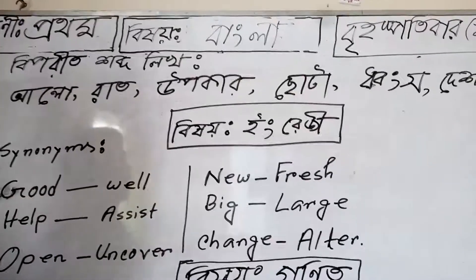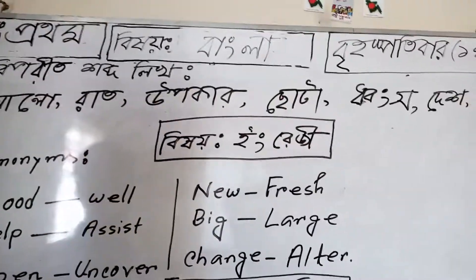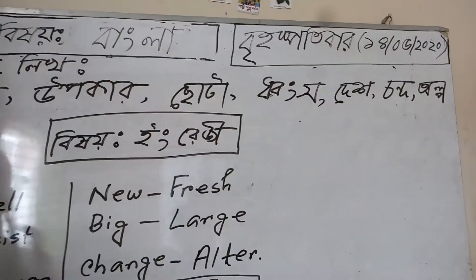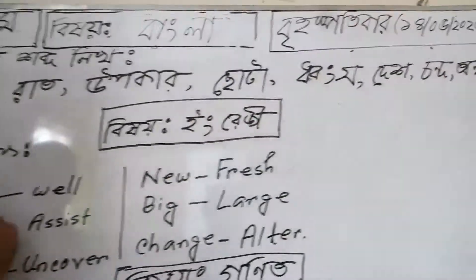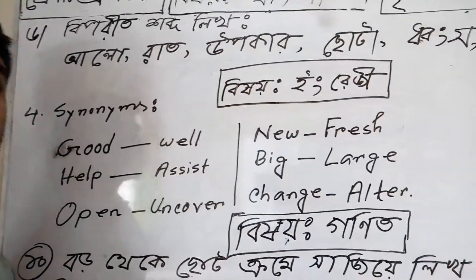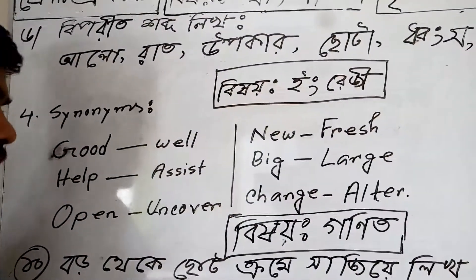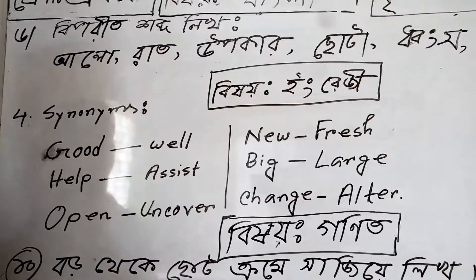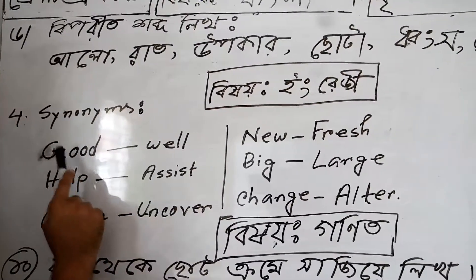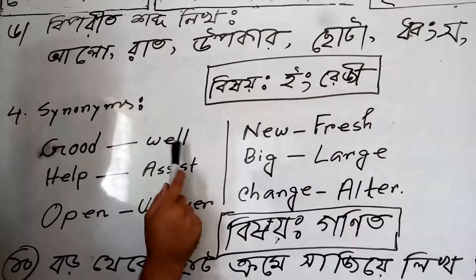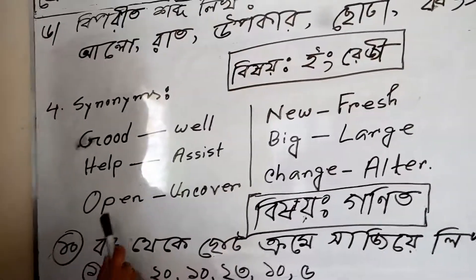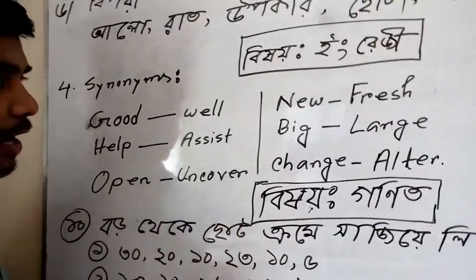Now I'm going to write that — the name of the book is called Synonym. Synonym is a form of words with the same meaning. For example, good and good are correct forms. Help, assist, open, uncover.